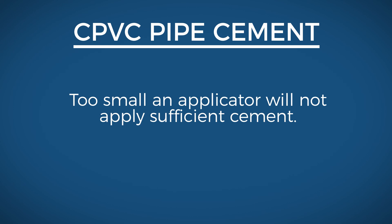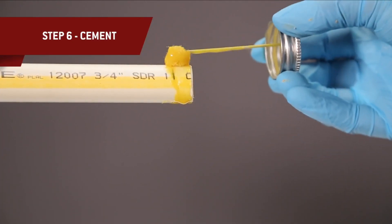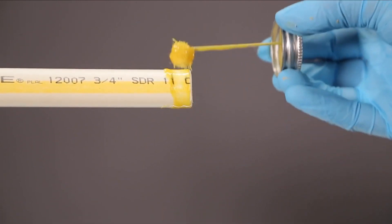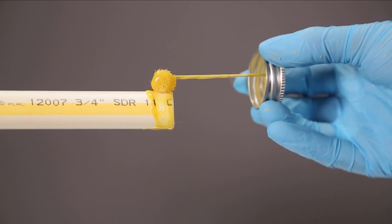Apply a full even layer of cement to the pipe surface to a point one-half inch beyond the hub depth. Aggressively work the cement into the surface of the pipe.